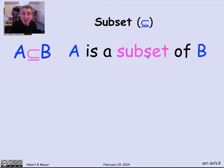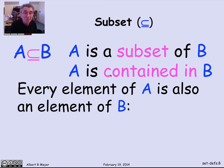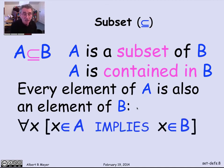So A is a subset of B. A synonym is that A is contained in B. It simply means that every element of A is also an element of B. And if I wrote that out in predicate logic notation, as a predicate formula, I'd say for every x, x is in A implies x is in B. If it's in A, then it's in B. Everything in A is in B.